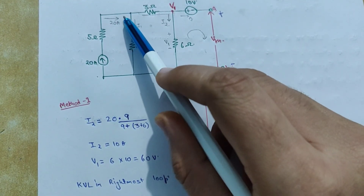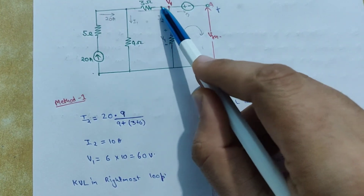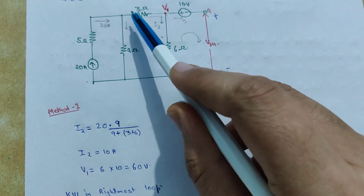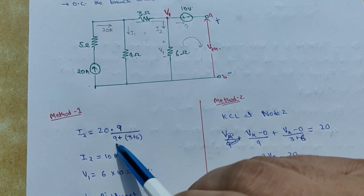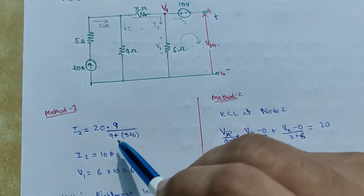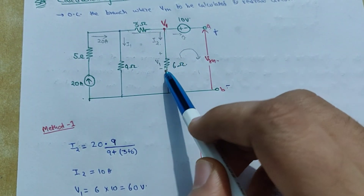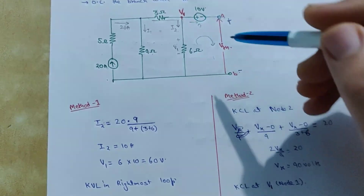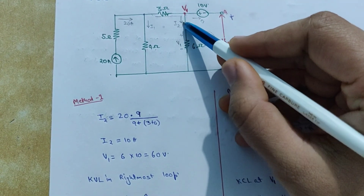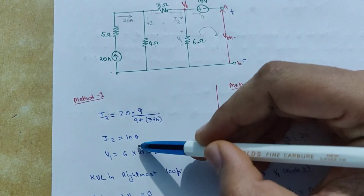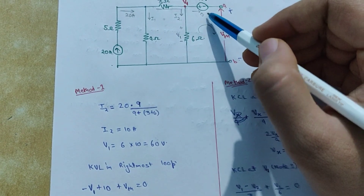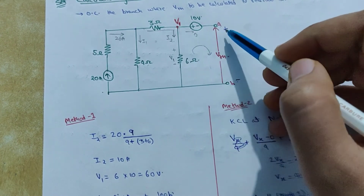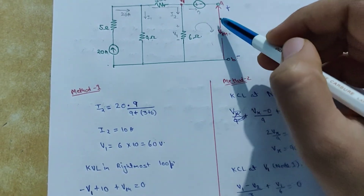I2 can be calculated simply using the current division rule. 20 amperes is entering into these two branches. There are 9 ohms in this branch and 3 plus 6 equals 9 ohms in the other branch, so the current divides equally — I2 is 10 amperes. Now V1 is the potential at that node and I2 is flowing there, so V1 equals 6 times I2, which is 60 volts. However, you can't simply say VTH equals V1, because there is a 10-volt source acting here even though the current in that branch is zero.